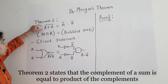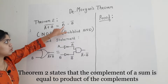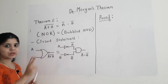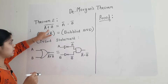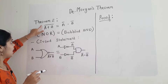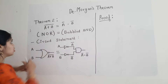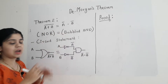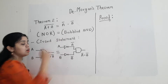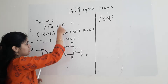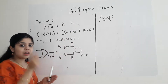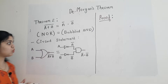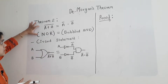The second theorem states that the complement of the sum is equal to the product of the complements. On the left hand side we have two variables A and B which have been OR-ed — that is, an addition operation — and then a complement has been taken, so this equation represents a NOR gate. Similarly, the RHS again has two variables but a complement has been taken for each individual variable: A-bar and B-bar, and these two are multiplied, making it a bubble AND gate.